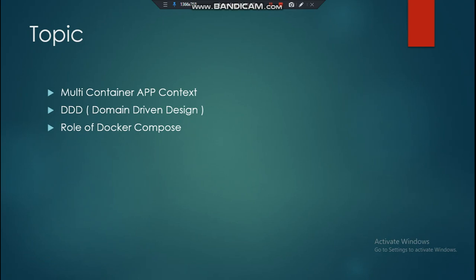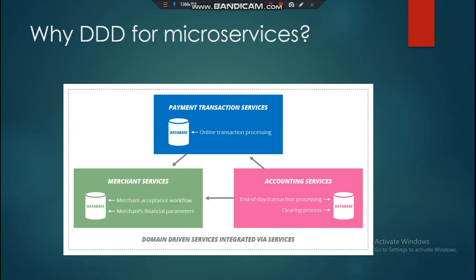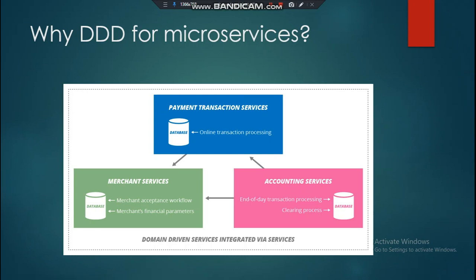That identification of domains is the most important thing, along with the role of Docker Compose. In a real-world scenario, these services represent application domains. The payment service contains online transaction processing, the merchant service handles the merchant workflow and related finance parameters, and the accounting service interacts with both the payment service and the merchant service. Each of these application domains has its own database and can be its own single container.